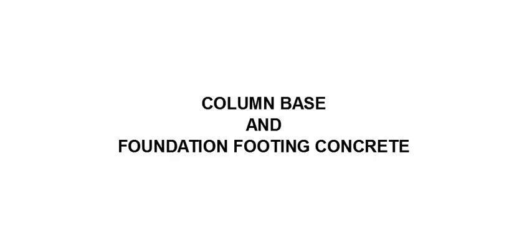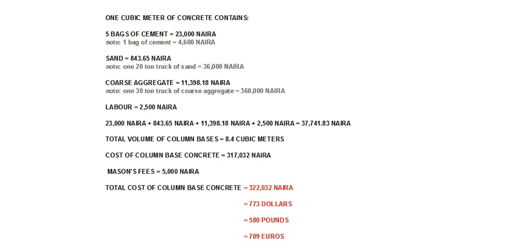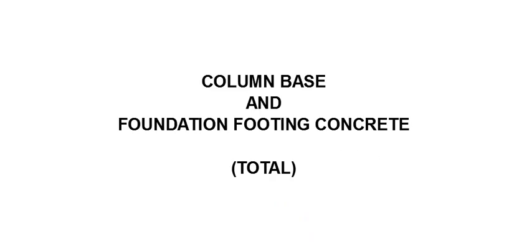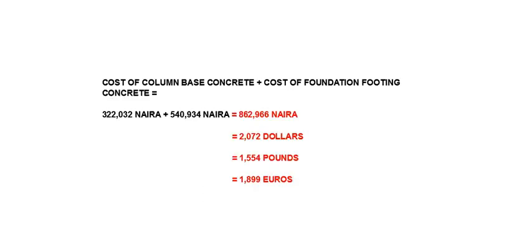Next we'll move over to the concrete in the foundation footing and the column bases. The column base concrete will cost 322,032 Naira, approximately 773 dollars, 580 pounds or 709 euros. The foundation footing concrete will cost 540,934 Naira, approximately 1,299 dollars, 974 pounds or 1,191 euros. So the total cost of concrete in the column bases and the foundation footing is 862,966 Naira, approximately 2,072 dollars, 1,554 pounds or 1,899 euros.